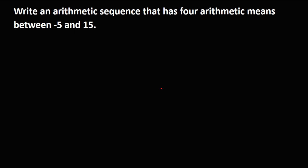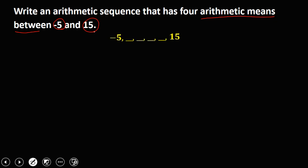Let's solve this problem. Write an arithmetic sequence that has 4 arithmetic means between negative 5 and 15. So this is the given: 4 arithmetic means between negative 5 and 15.